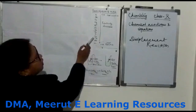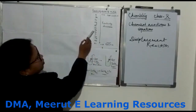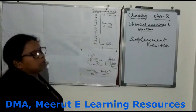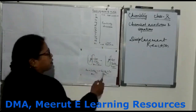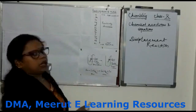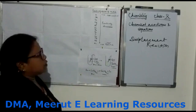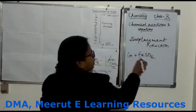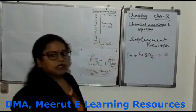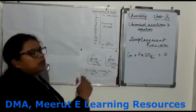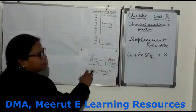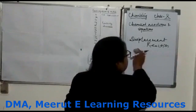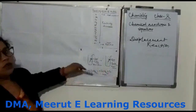For example, iron is more reactive than copper. Magnesium is more reactive than iron. Aluminium is more reactive than copper. So we can compare and find out which metal can displace another metal. The reaction takes place between a metal and a metal salt solution. If I write copper plus FeSO₄, the reaction is not possible because copper is less reactive than iron, so it will not displace iron. But iron can displace copper from copper sulphate solution. In a displacement reaction, the more reactive metal displaces the less reactive metal from its salt solution.